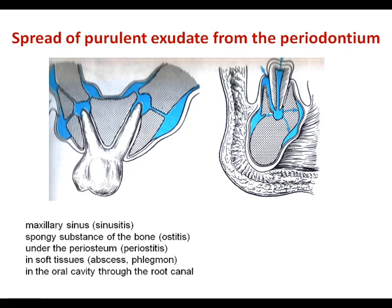Purulent exudate may spread from the periodontium in different directions: to the maxillary sinus causing sinusitis; into the spongy substance of bone causing osteitis; under the periosteum causing periostitis; into soft tissue causing abscess or phlegmon; and into the oral cavity through the root canal.